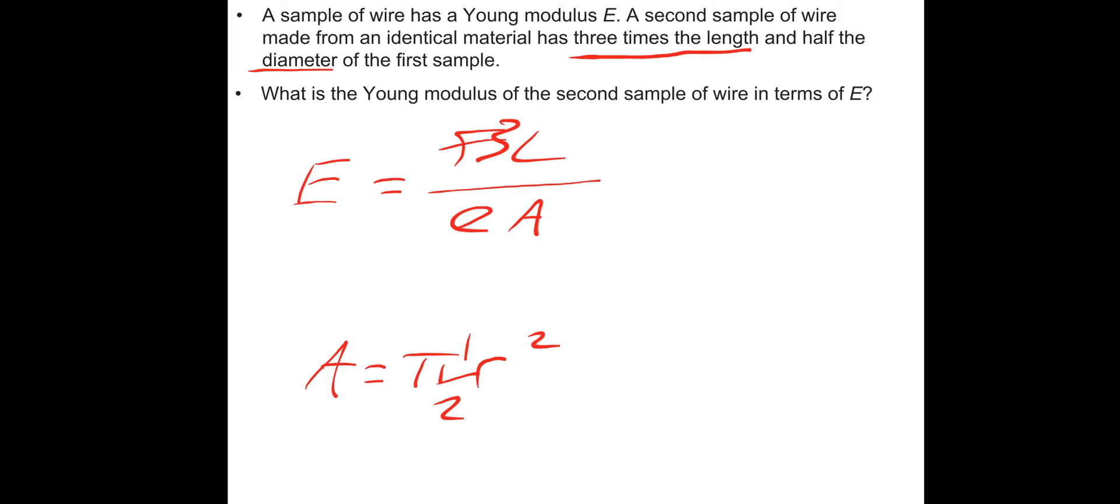A quarter of the area. Then it's simply 3 divided by a quarter. How many quarters are going to 3? Would be 12. So you might have got an answer of 12E, which is completely wrong.